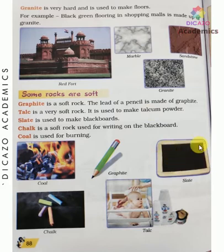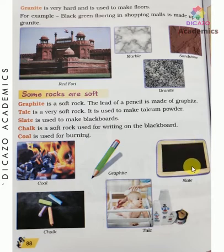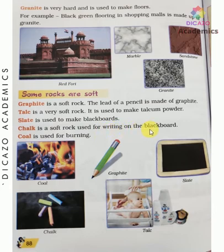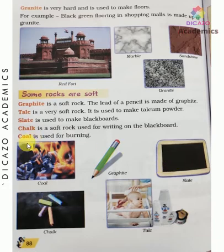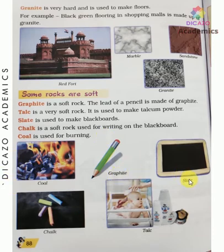Slate is used to make blackboards. Chalk is also a soft rock and is used for writing on the blackboard. Coal is used for burning. So these are some soft rocks: graphite, slate, talc, chalk, and coal.